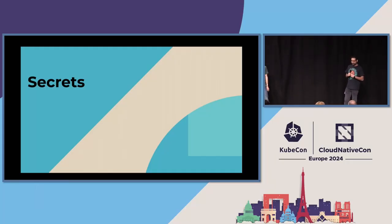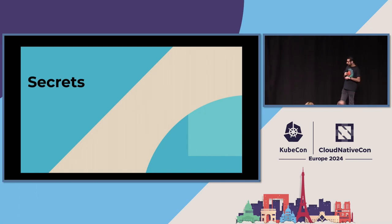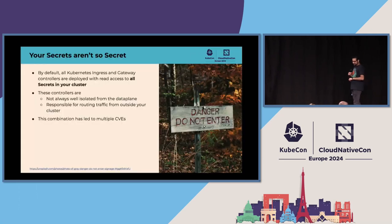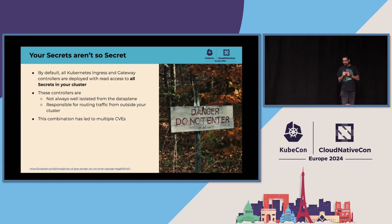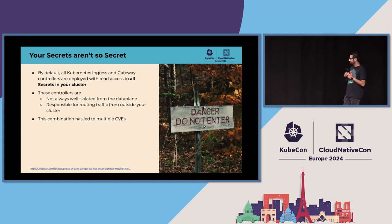So, secrets. I like to keep my secrets to myself, and I hope you do as well. Unfortunately, that's not always the case in Kubernetes. In particular, if you run Ingress controllers today, you give them access to all your secrets, whether you've thought about it or not. This is not a good thing — it's actually a really bad state.